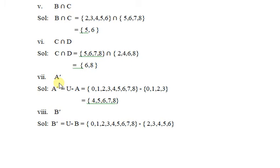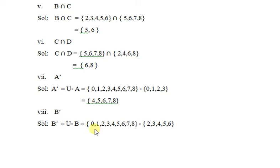A complement means U minus A — universal set minus set of A. Universal set میں سے آپ نے A set کے elements کو نکال کے جو باقی بچ جائیں گے انکو answer میں لکھنا ہے۔ B complement means U minus B — universal set minus set of B. Universal set میں سے B set کے elements کو minus کرکے جو باقی بچ جائیں گے وہ answer میں لکھ دینا ہے۔